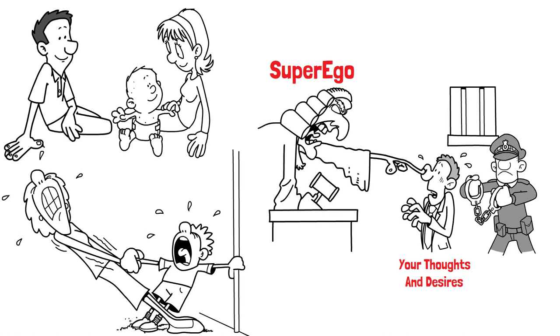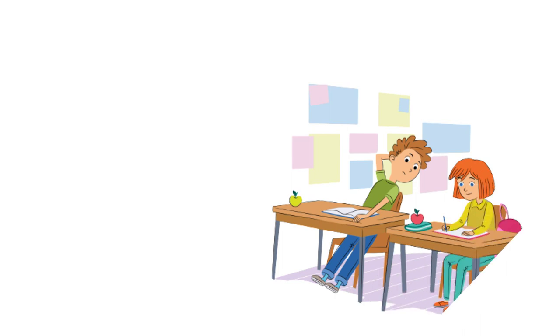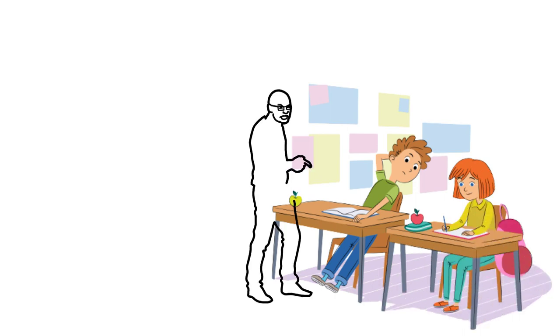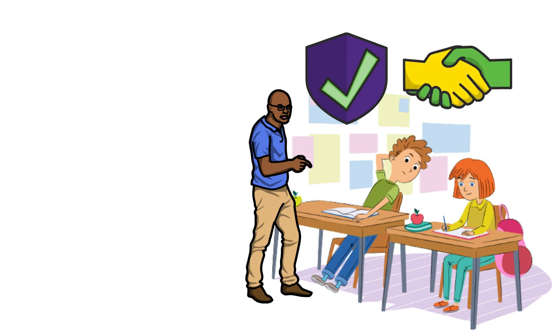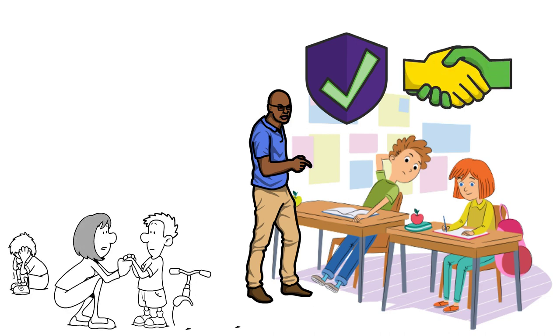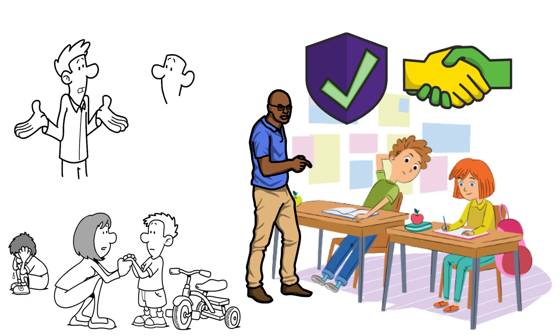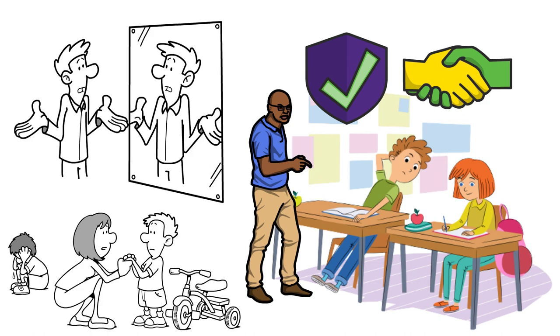Consider a situation where you're tempted to cheat on a test. The superego, like a stern teacher, reminds you of the principles of honesty and integrity that you've internalized from your upbringing and culture. It generates guilt and anxiety when you contemplate dishonesty, often making it difficult to act against your moral principles.